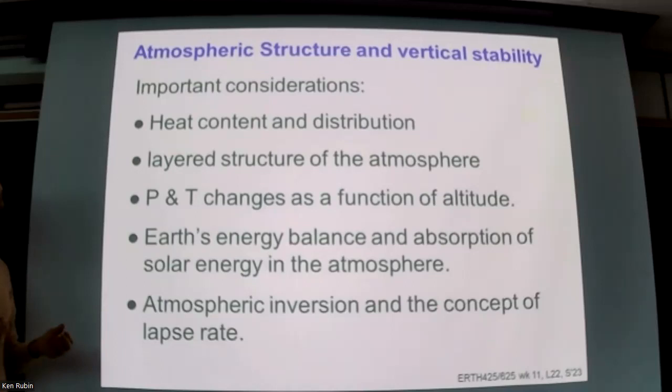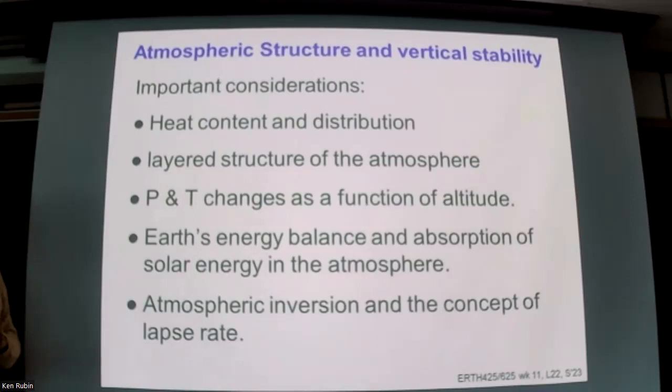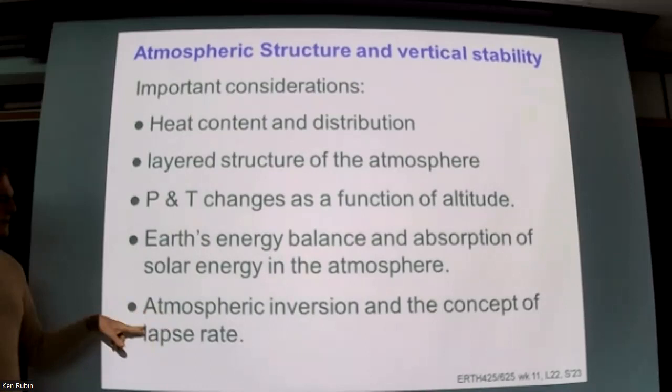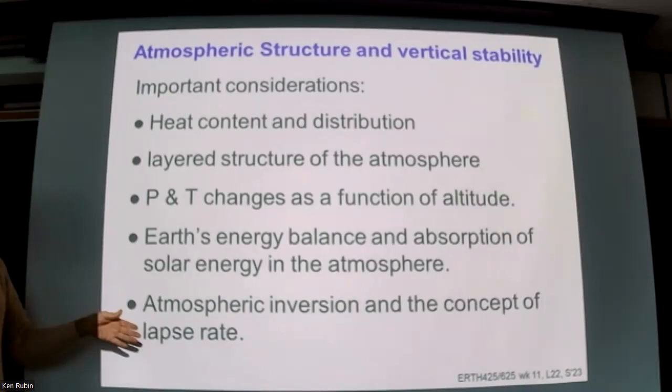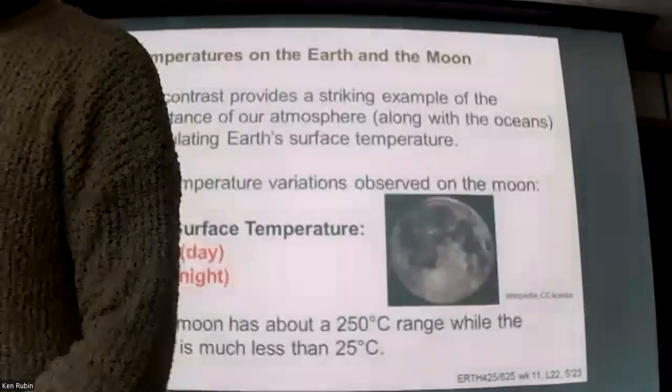We want to talk about atmospheric inversions and the concept of lapse rate today, because that determines to some extent whether or not air masses stagnate in certain areas — inversions lead to things like photochemical smog and acid rain.